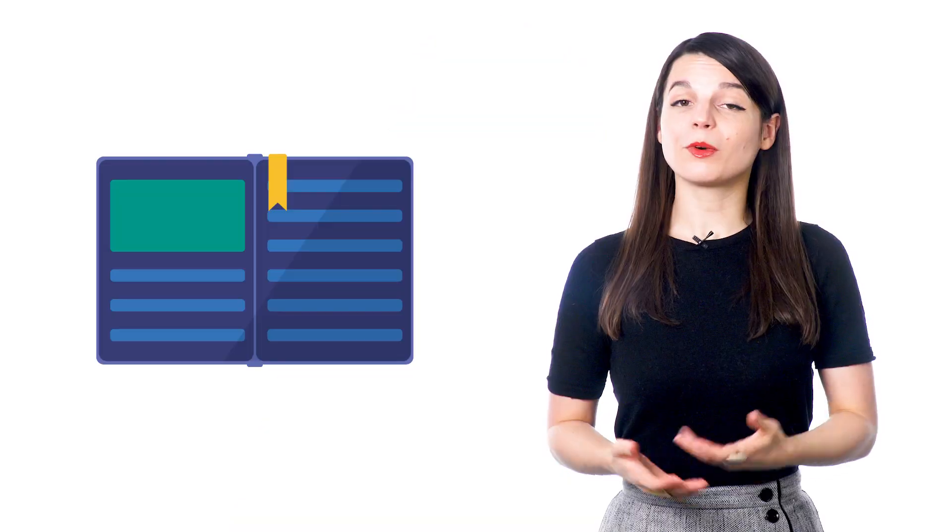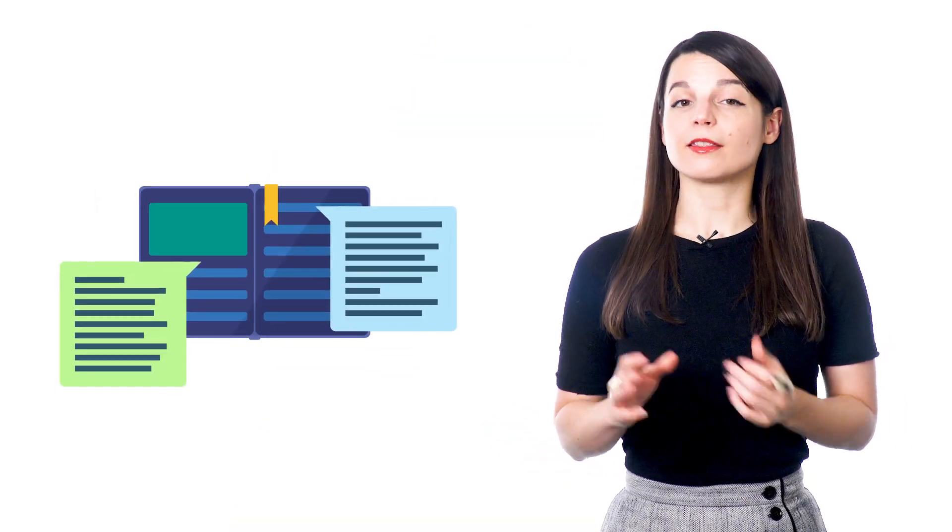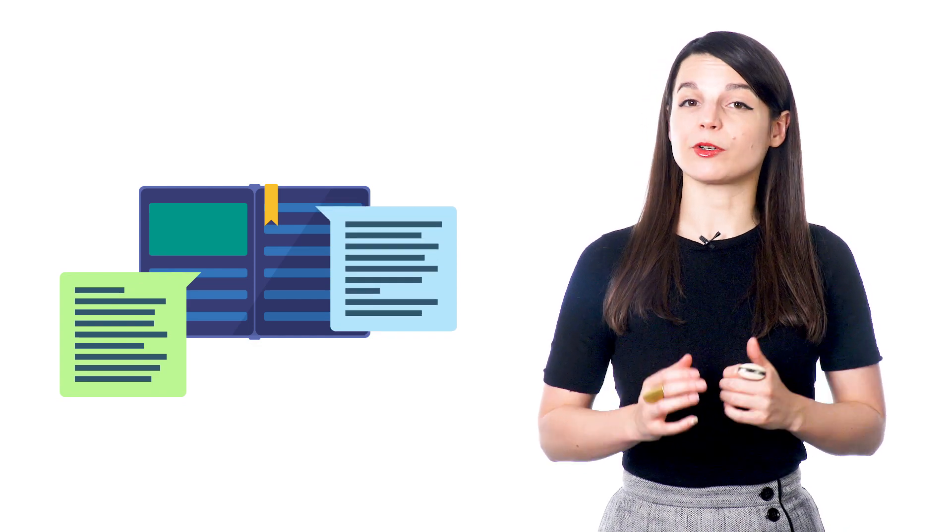These are books that have your target language on the left page and your native language on the right. But how do you use it? Well, it's all in the name. You read a book in two languages at once. The language that you're learning plus the language that you're fluent in.